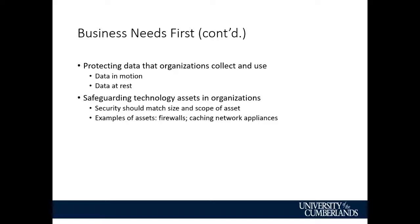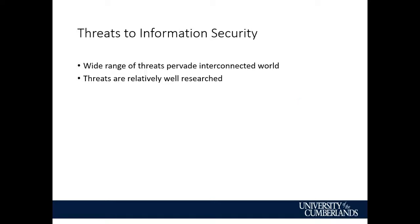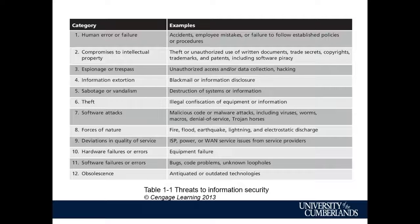Anytime we connect to the internet, there's a whole bunch of threats throughout the world that can try to get our information. Human error — accidents, employee mistakes or failures — happens quite a lot. We do our best to train employees. We have espionage, information extortion, ransomware, sabotage, and disgruntled employees. Look at Snowden — he was not happy with what was going on and let out a lot of stolen information. There's also theft, software attacks, and denial of service.